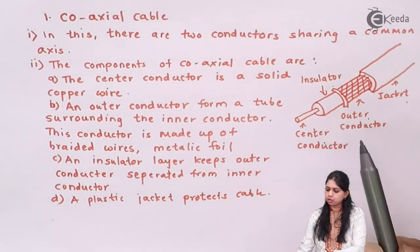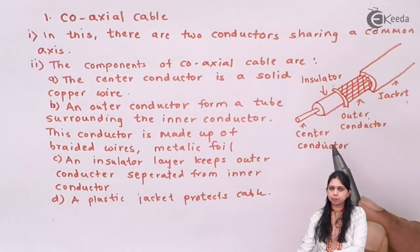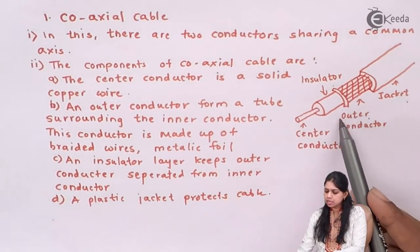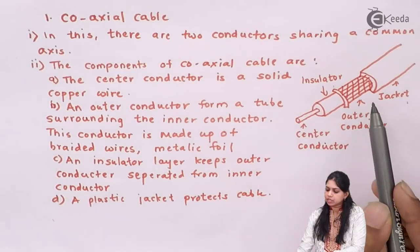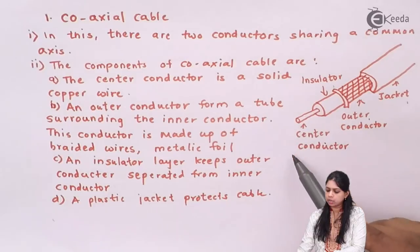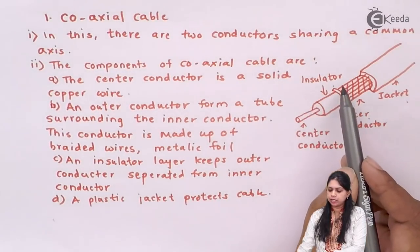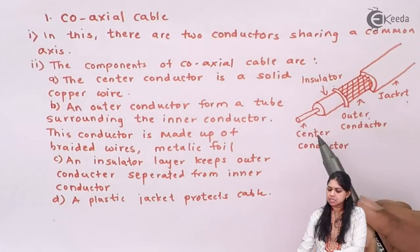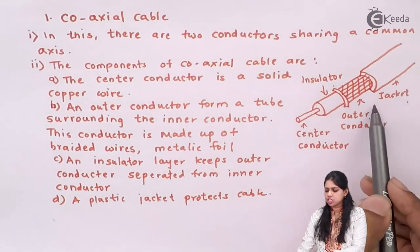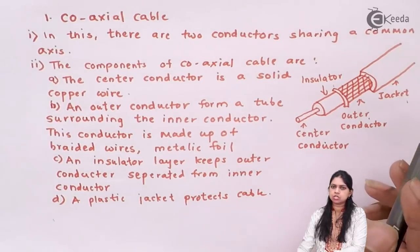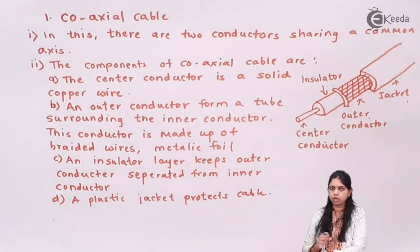The center conductor is made up of solid copper wire. The outer conductor forms a tube surrounding the center conductor, and this outer conductor is made up of metallic foil. The insulator is used to keep the center conductor and outer conductor separated from each other. Finally, the plastic jacket is used to protect the cable from damage.